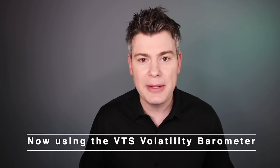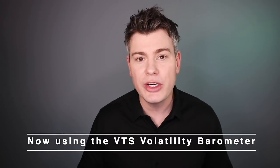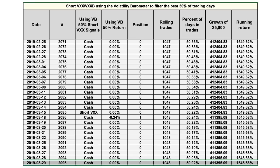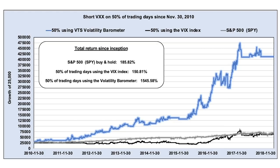Now I'm going to show you the exact same backtest, with the only difference being I'm now going to use the volatility barometer as the filter. Just like with the VIX test, half the time allocated to short volatility positions during the lowest 50% of volatility readings and the other half in cash — as simple as it gets. This is the same 1,048 days in trades out of the 2,095 since inception, all trading rules identical, only switching out the filter. And here's the result in blue — quite a stunning difference the quality of the filter makes. The VIX filter would only have produced a 150.81% gain, but using the volatility barometer instead, it's over 1,500% gain, and more consistent as well, with smaller and more manageable drawdowns.